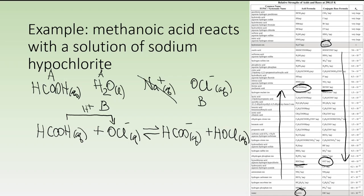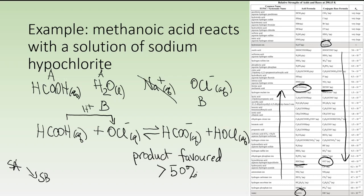The last step is to assess extent of reaction. Here, the strongest acid is in a position of strength compared to the strongest base, so we have a product-favored reaction — symbolized by greater than 50% conversion.